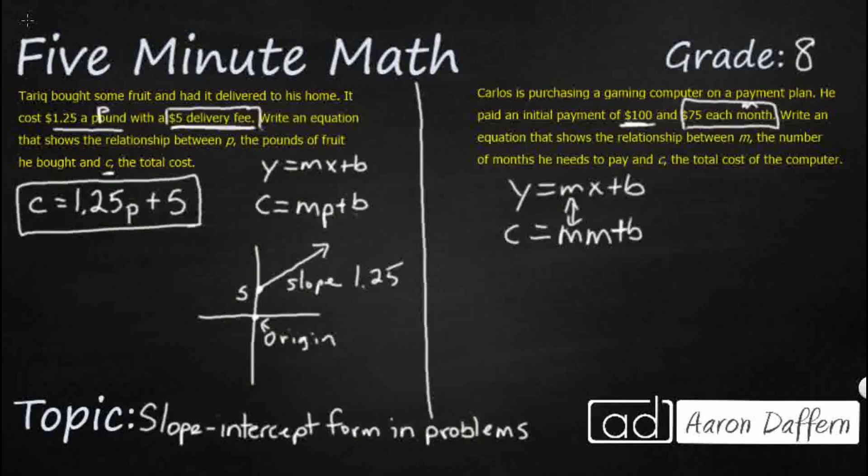So let's see what happens when we have zero months. Well, we've still got this $100. It's not related to any unit. So that is going to be my Y intercept. So I'm paying $100 initially. That stays the same.